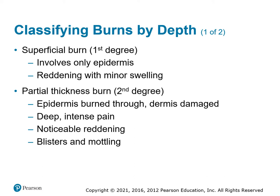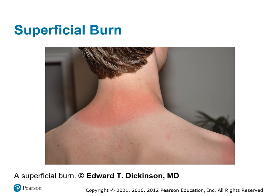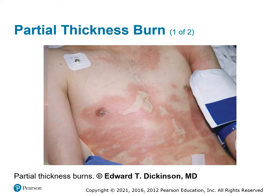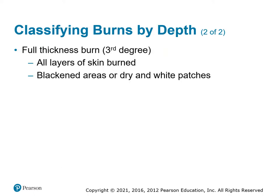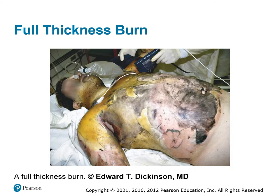Superficial burns were formerly called first degree — only the epidermis. Partial thickness burns go through the epidermis into the dermis, with very intense pain, reddening, and blistering. Here's an example of a superficial burn, and here's a partial-thickness burn showing blistering around the belly and shoulder. Full-thickness burns go through all the skin — black and charred-looking, with black and white patches. The tissue is essentially destroyed down to the muscle.